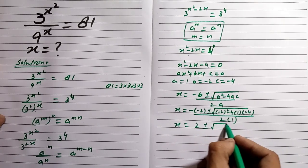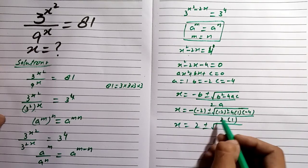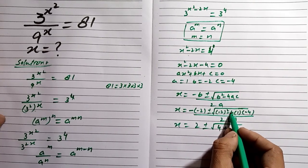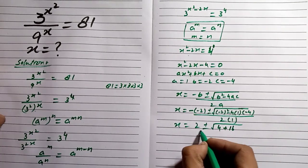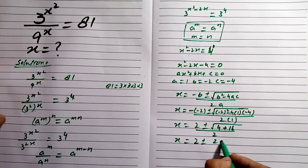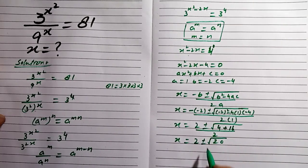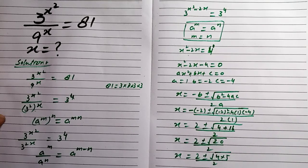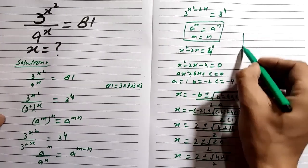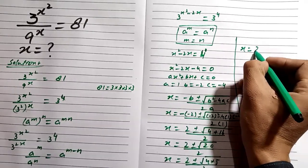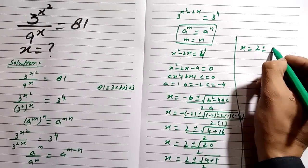This becomes 2 plus or minus the square root of 4 plus 16, divided by 2. So x equals 2 plus or minus the square root of 20, divided by 2. We can write 20 as 4 times 5, so x equals 2 plus or minus the square root of 4 times 5, divided by 2.